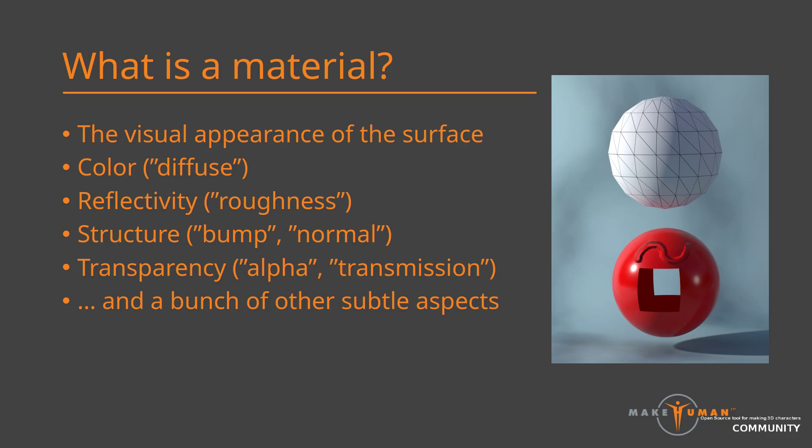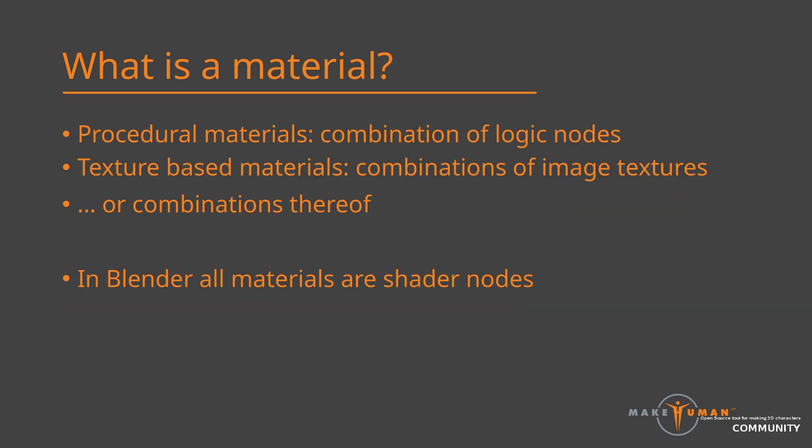There is a huge set of other things you can do with materials — Blender shader nodes is something that can take years to learn, but these are at least some of the most commonly used aspects. When discussing materials you will often hear the term procedural, which means the material contains logic to control its aspects, such as a mathematical function to draw a pattern or logic for mixing different aspects together. The alternative to procedural materials are image-based materials, where you use static images to control the aspects of the material.